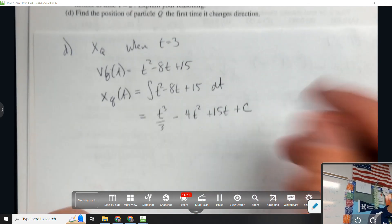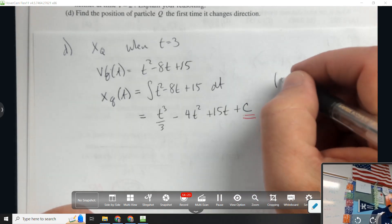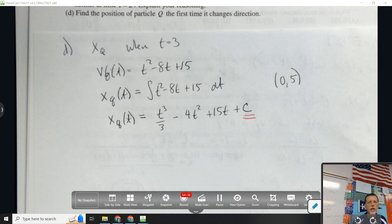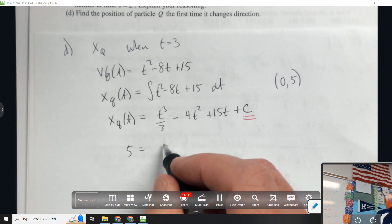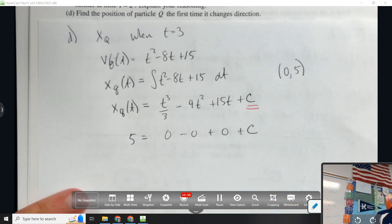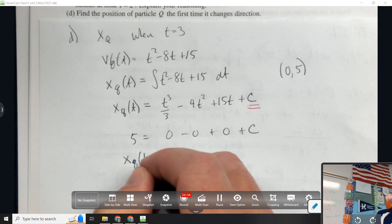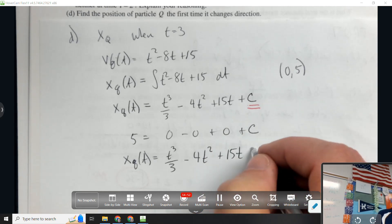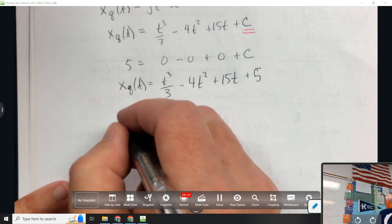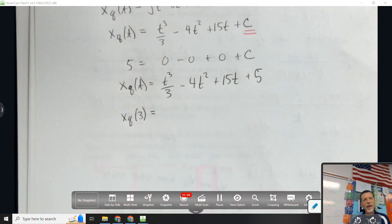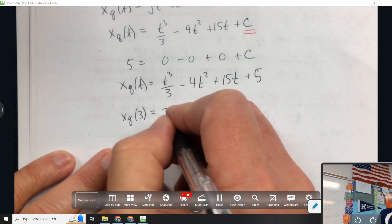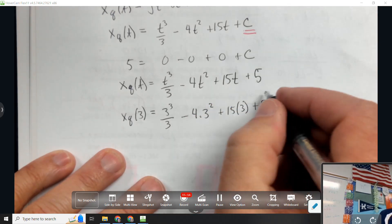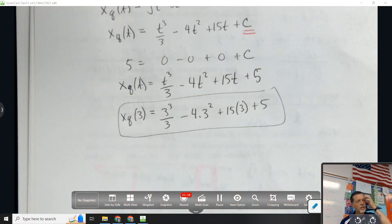That would be t³/3 - 4t² + 15t + C. The plus C is kind of annoying, but they told us that when t is 0, the position is 5. So if the position is 5 when t is 0, C is 5. So t³/3 - 4t² + 15t + 5, and then we want that at time equals 3. This is the last thing asked for, so I'm going to safe stop this. 3³/3 - 4(3²) + 15(3) + 5.